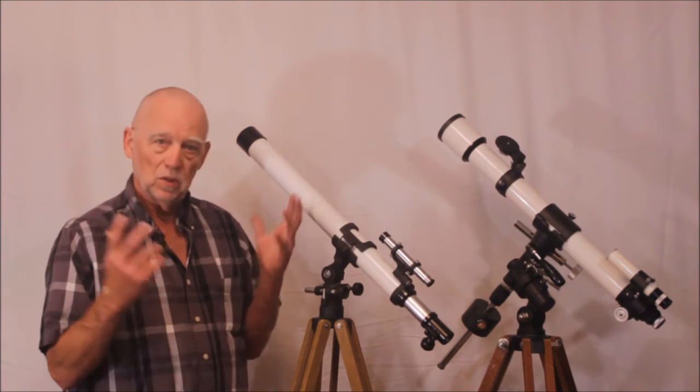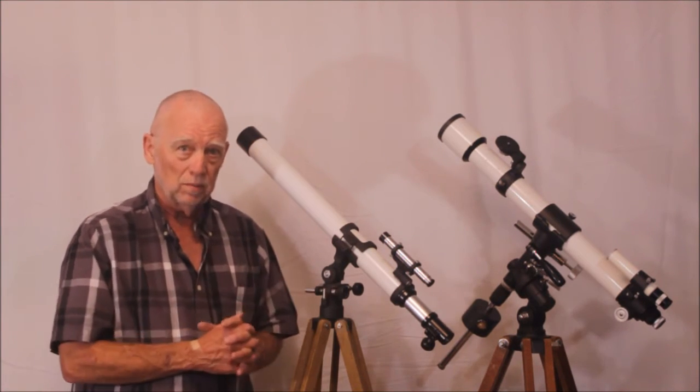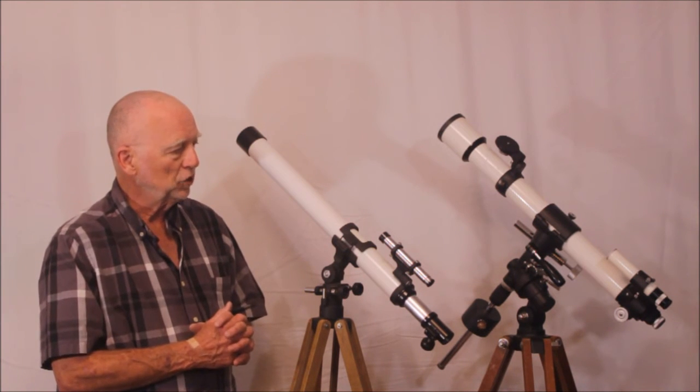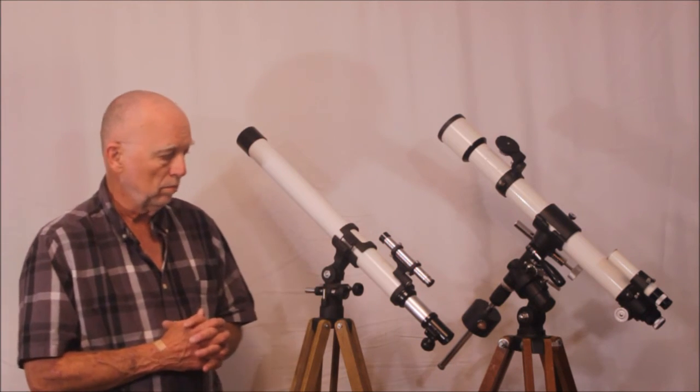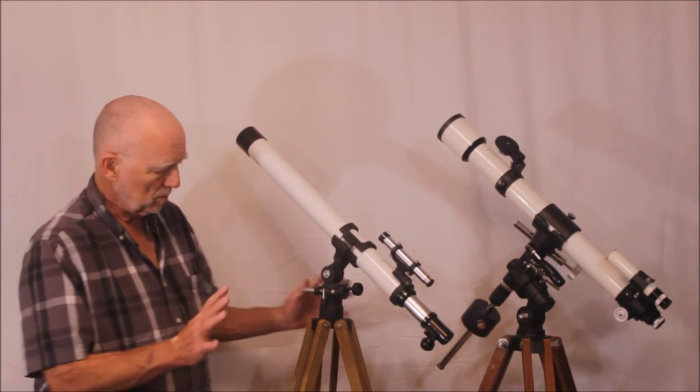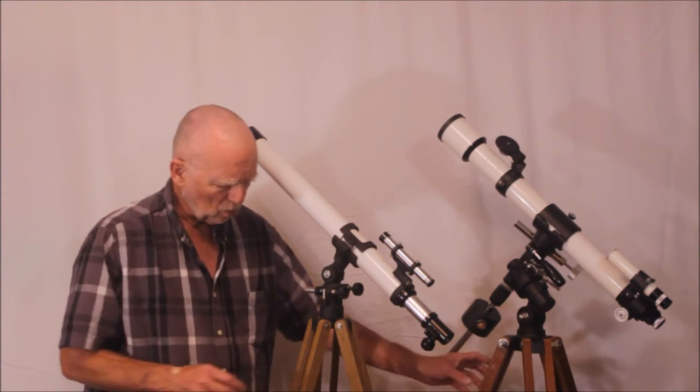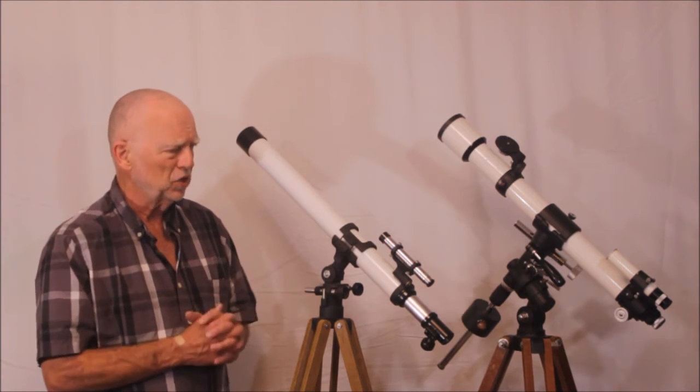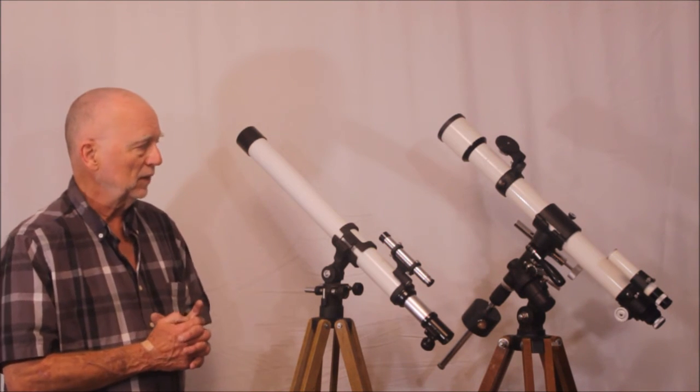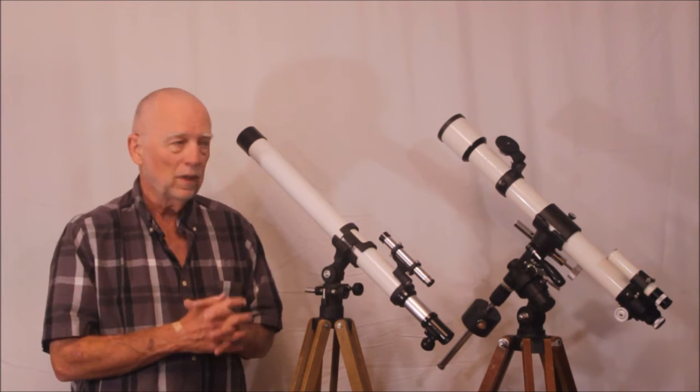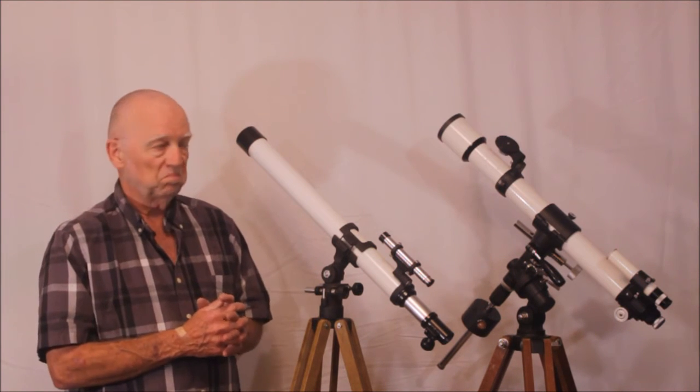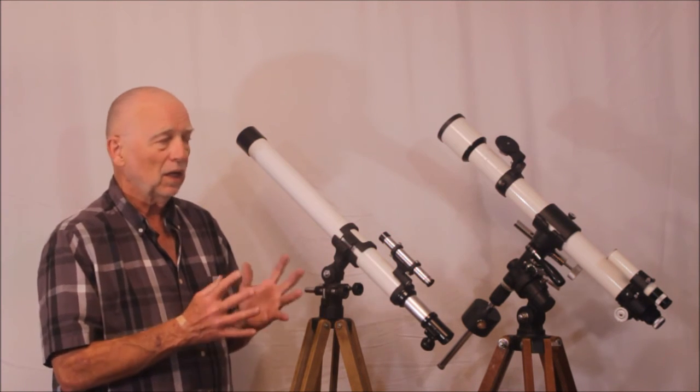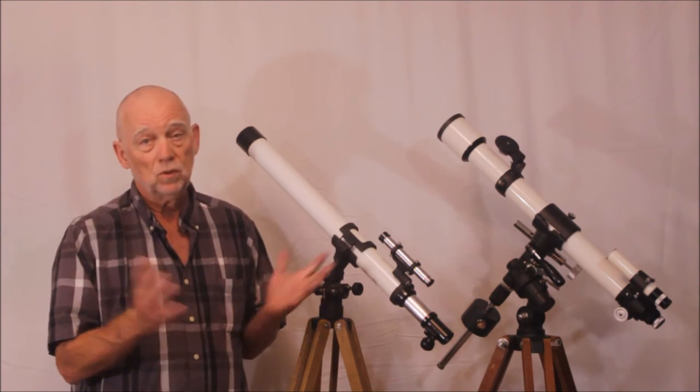But the advantages of the equatorial mount are numerous. And the fact that it's so hefty means that you could do a lot with it. You could put a much bigger scope on it and so forth. So the Takahashi is superior in both of those respects. In terms of overall stability, just the overall weight of the mount, the thickness of the legs and so forth, Takahashi wins. Takahashi wins in every respect. And when you compare them optically, the Unitron is a good telescope. There's nothing wrong with the Unitron. And a Takahashi 50 millimeter is a beautiful telescope as well.